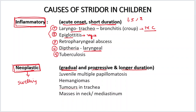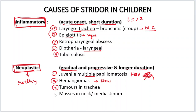Juvenile multiple papillomatosis is caused by human papillomavirus, so multiple papillomas will present all over the larynx causing Strider and respiratory distress. Hemangiomas are slow-growing tumours and quite rare. Tumours of the trachea are also quite rare. Masses in the neck or mediastinum may be because of lymphoma and such things which are going to compress the trachea.